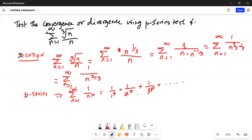This p-series converges if p is greater than 1, and this p-series diverges if p is less than 1.